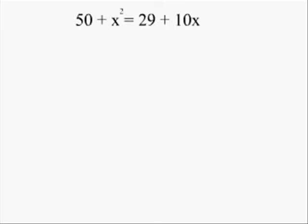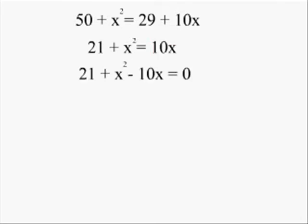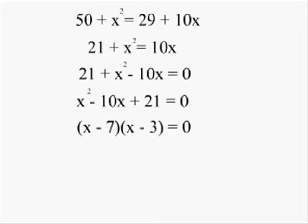For this quadratic equation, 50 plus x squared equals 29 plus 10x, he would subtract 29 from both sides to get 21 plus x squared equals 10x. After that, he would subtract 10x from both sides to get x squared minus 10x plus 21 equals 0. He would then factor that to get x minus 7 times x minus 3 equals 0, giving two solutions: x equals 7 and x equals 3.